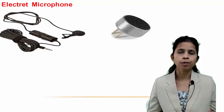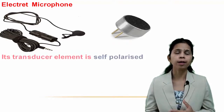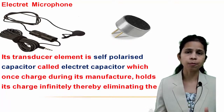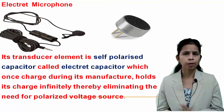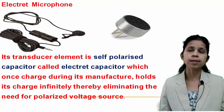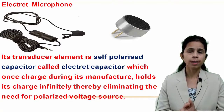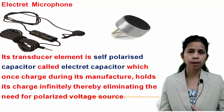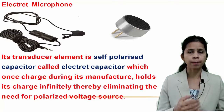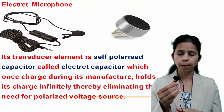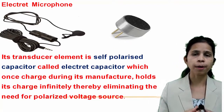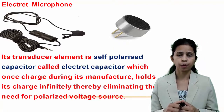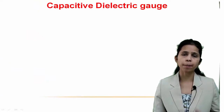Another way of supplying power is by using an electret — a permanently charged dielectric ferroelectric material which, once charged during manufacture, holds its charge indefinitely, eliminating the need for a polarizing voltage source. The electret microphone is similar to the condenser microphone, except it does not need a polarizing voltage source. The electret material is coated as an ultra-thin film on the back plate or on the diaphragm. Electret microphones are found in portable devices such as laptops, mobiles, and computers.